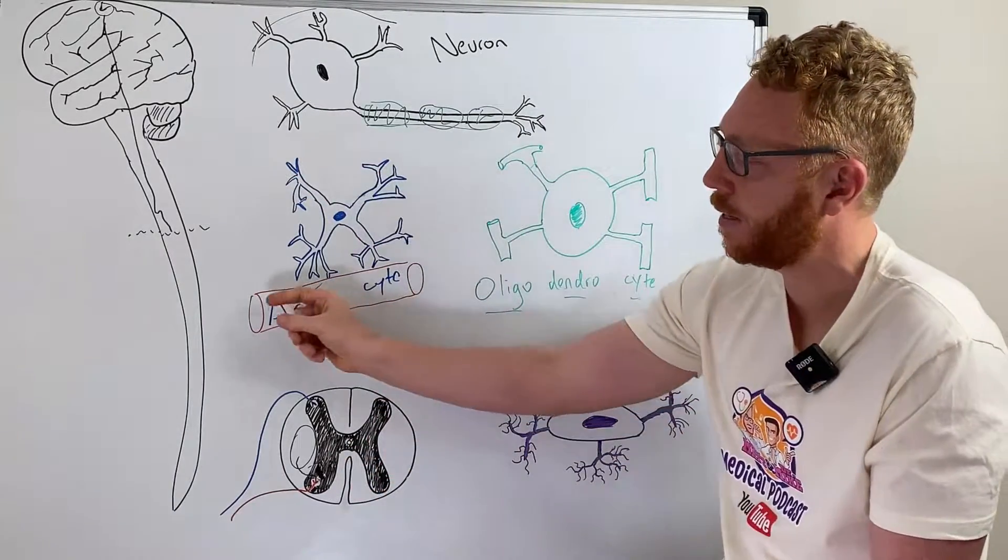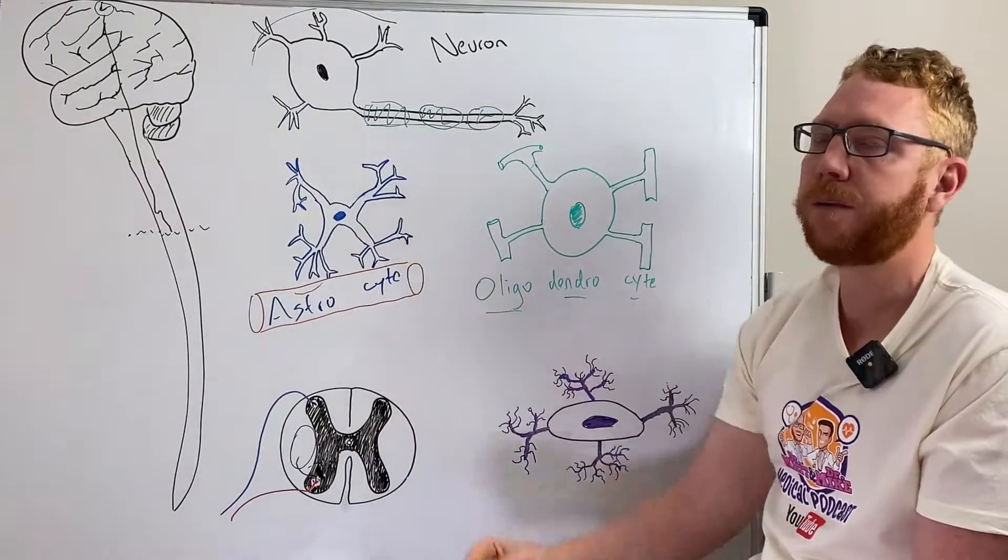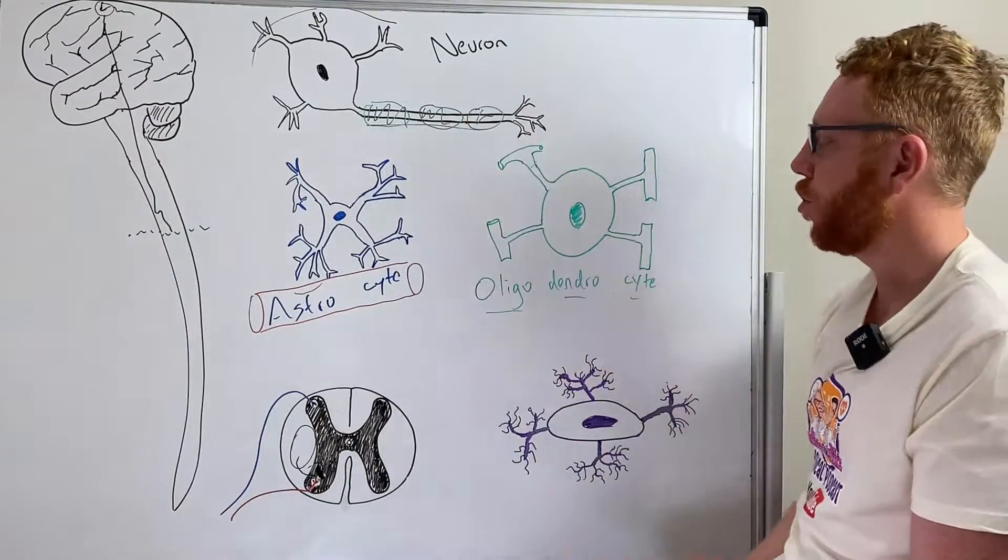Therefore, it can dictate the amount of blood flow that's actually coming to that area. It plays a very important role for maintaining the working environment for the neuron.